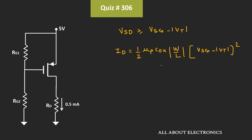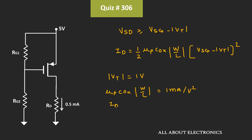We have already been given the value of µP times COx times W/L. The threshold voltage VT is equal to 1V, while µP times COx times W/L, the process transconductance, is equal to 1 mA per volt squared. And the drain current Id is equal to 0.5 mA.